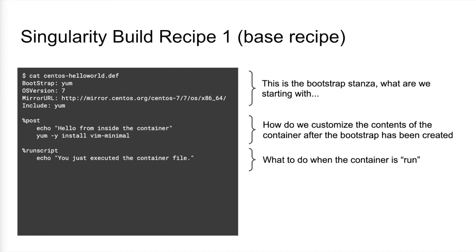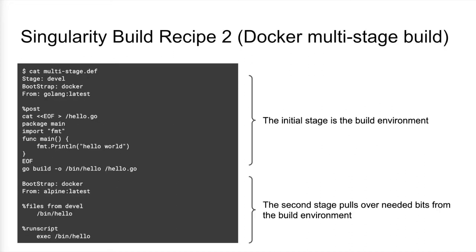The following run script defines what will happen when this container is run or executed directly. Here's another example that demonstrates both a Docker integration as well as a multi-stage build. We start off by pulling a Golang container from Docker Hub. Once that is pulled, we compile a simple program. This entire Golang container is large and most of it is completely unnecessary once my application is compiled. So I'm going to create a second container and cherry pick files from the development stage and put them into the final container. The difference in resulting size of this example is 3.7 megabytes versus 281 megabytes.